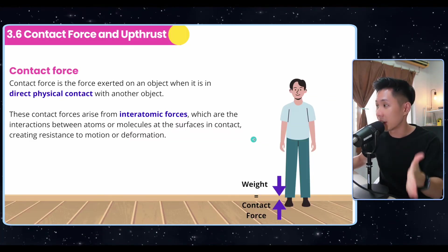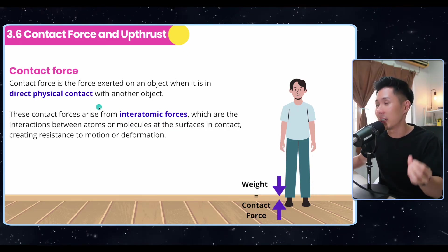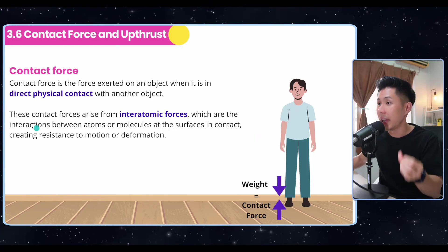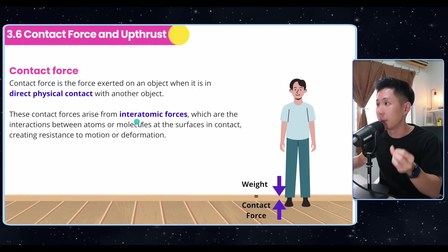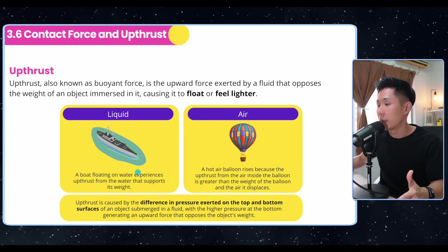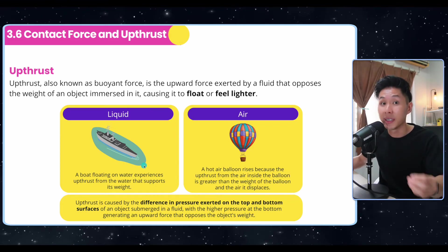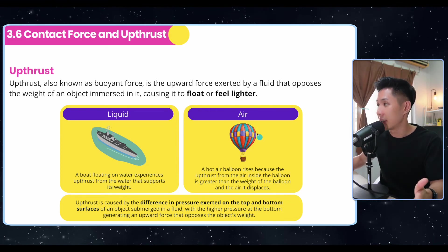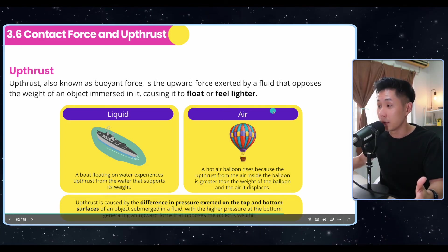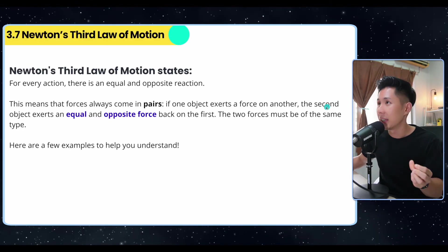Another force is contact force. It's the force encountered by two objects interacting with each other. This contact force arises from inter-forces. In liquid, a boat floating on water experiences uptrust that supports its weight. That's why it doesn't sink. In air, a hot air balloon is one example. You can read the description I've written here that explains what creates uptrust in fluid.